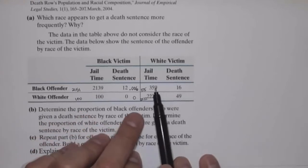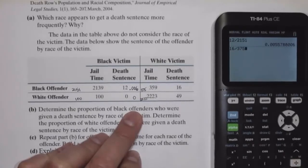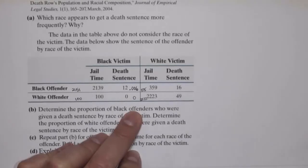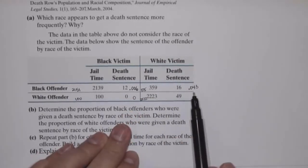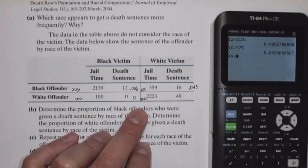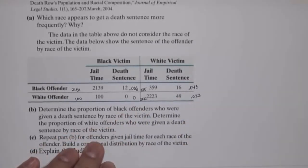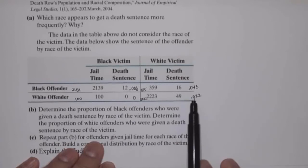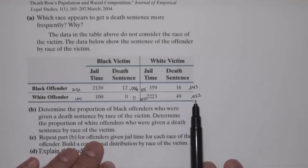Looking at white victims: 16 divided by 375 is 0.043. So if the victim was white and the offender was black, the death penalty occurred about 4.3% of the time. And for white offenders with white victims: 49 divided by 2,272 is 0.022. So if the victim is white and the offender is white, the death sentence was given about 2.2% of the time.